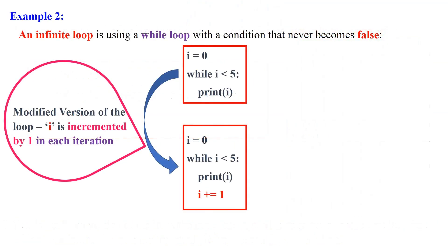Here is another example of an infinite loop using a while loop with a condition that never becomes false: `i = 0; while i < 5: print(i)`. Here, i is initialized to 0 and the loop condition is i less than 5. However, the value of i never changes within the loop, so the condition is always true. To fix this, modify the loop as `i = 0; while i < 5: print(i); i += 1`. Now i increments by 1 each iteration, eventually causing the condition to become false and the loop to terminate.